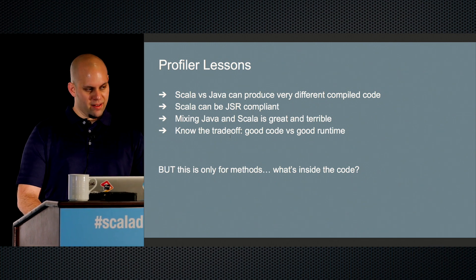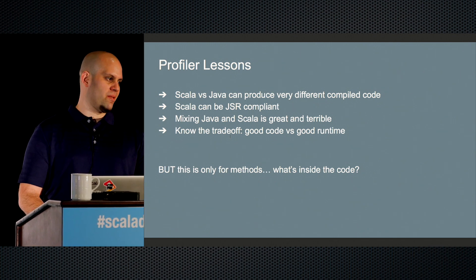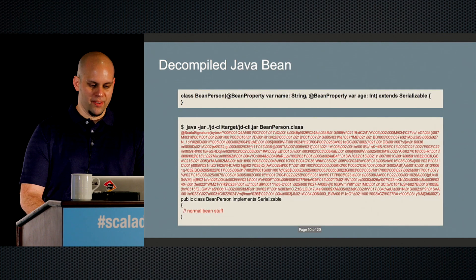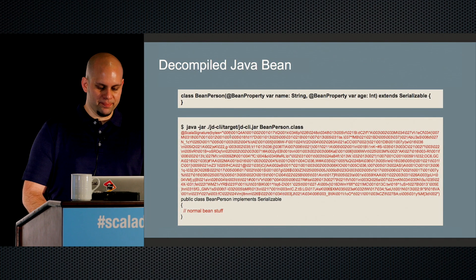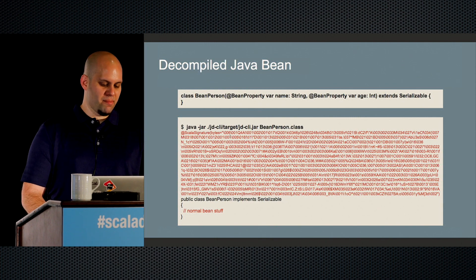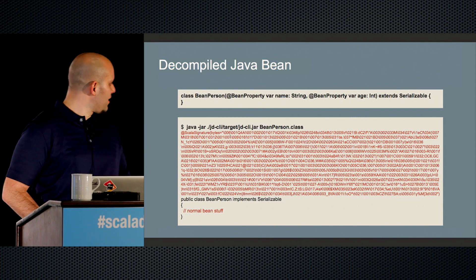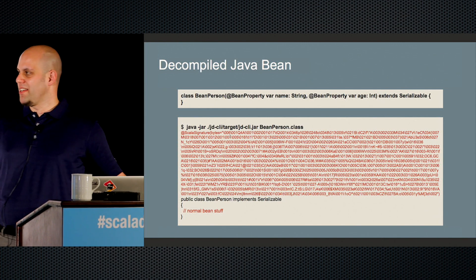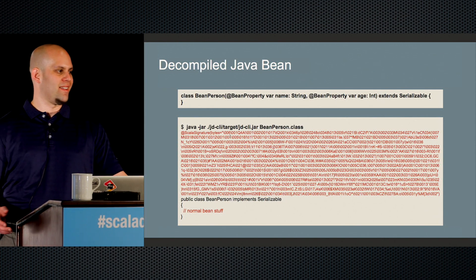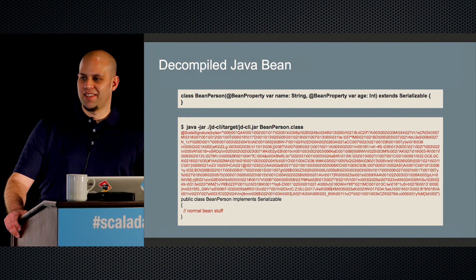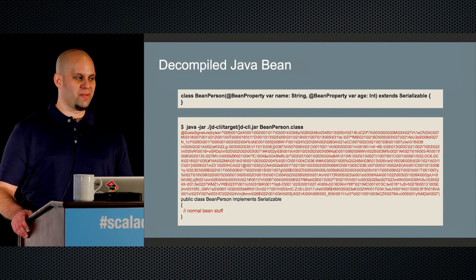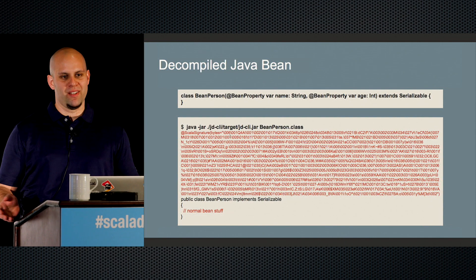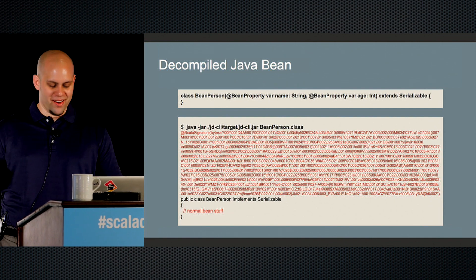Let's go through the decompiler so we can actually see what's going on under the hood. Going back to my bean person — when I run the decompiler, I get this massive @ScalaSignature annotation on the top. When I started decompiling Scala code, this was the first thing that jumped out at me. I don't normally see this in Java code. What is going on here?